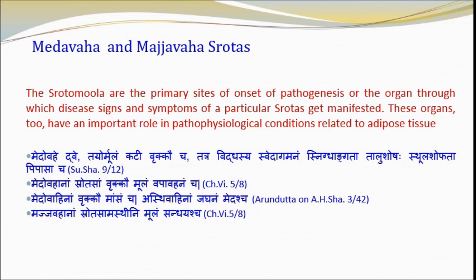Regarding Mansa as a mool of Medhavahi Srotas — certain studies have reported that myokines released by contracting muscles form a cross-talk between skeletal muscle and adipose tissue, and besides affecting the functioning of skeletal muscle, also affect adipose tissue. Vapa Vahen and Kati as mool of Medhavahi Srotas represent omental fat and waist. The main sites for deposition of visceral fat are Vapa Vahen and Kati. In the case of obesity, adipocytes present in the omentum release adiponectin, which is responsible for chronic sub-inflammatory reactions in the body leading to metabolic disorders.